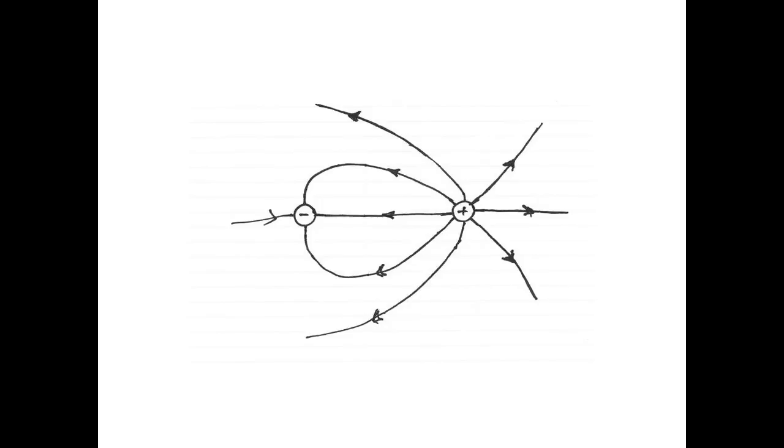We're going to draw the easy ones first, so we're going to start with the ones that are closest to the two charges. So here are the two equipotential surfaces that are closest to the two charges. All that's left to do is to fill it in with dotted lines. So here they are.